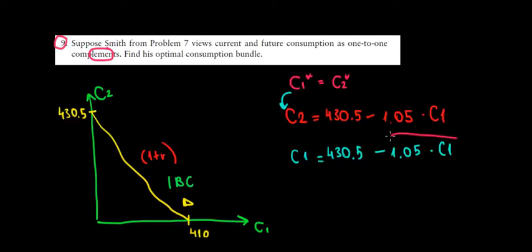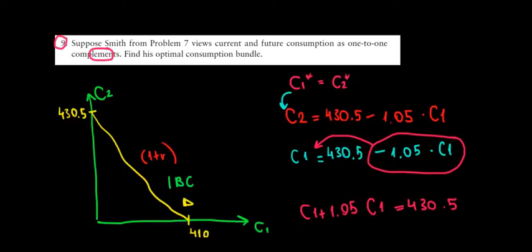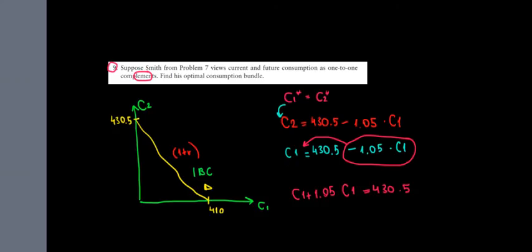We'll take this term on the other side and solve the math. So we would have consumption one plus 1.05 consumption one equals to 430.5. Let's zoom out to get some space here.